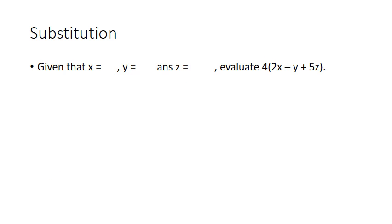Lastly, let's move on to substitution, whereby we replace the letters with numbers. Given that x is equal to 5, y is equal to minus 3, and z is equal to half, evaluate the following expression. Now, if you are given an expression with brackets, be sure to simplify it first.